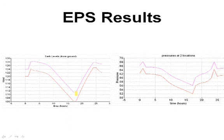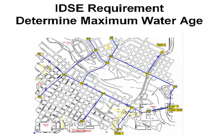When you run this, you'll see, for example, the tanks going up and down. As the tank goes down, the pumps kick on, and the tanks go back up again. Pressure variations range from a high of 68 down to a low of around 56, quickly showing you the variations in your system over a typical day.